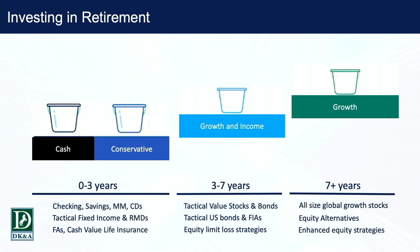The second bucket is growth and income — more aggressive, designed to grow and refill your conservative bucket when the market recovers. The third bucket is your growth bucket, and this is a great place for Roth money or any tax-free money, because you want that to grow the fastest.